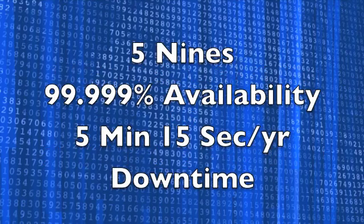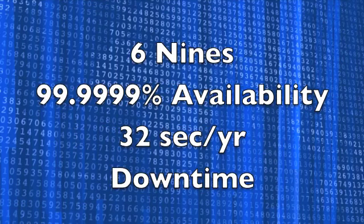Here are some handy numbers to give you perspective on the whole nines issue. Five nines, or 99.999% availability, means five minutes, 15 seconds or less of downtime in a year. Or if you're really ambitious, shoot for six nines, or 99.9999% availability. That allows just 32 seconds or less of downtime per year.